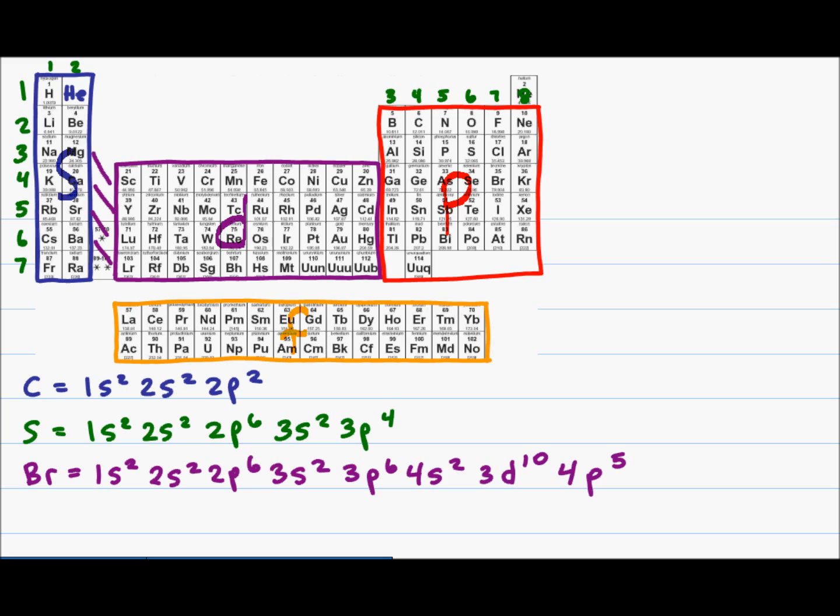Adding them up we get a total of 35, which is the atomic number for bromine. And so the electron configuration for bromine is 1s2 2s2 2p6 3s2 3p6 4s2 3d10 4p5.